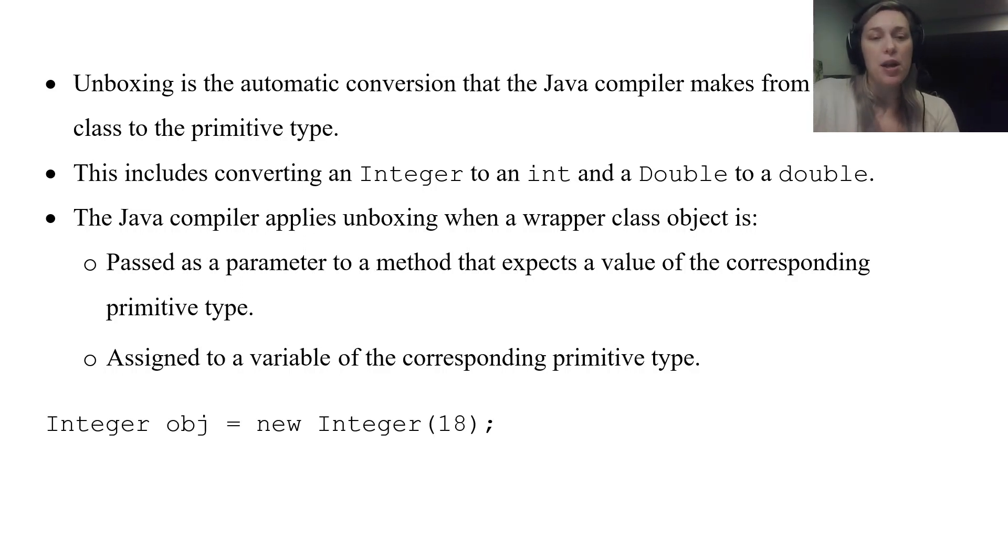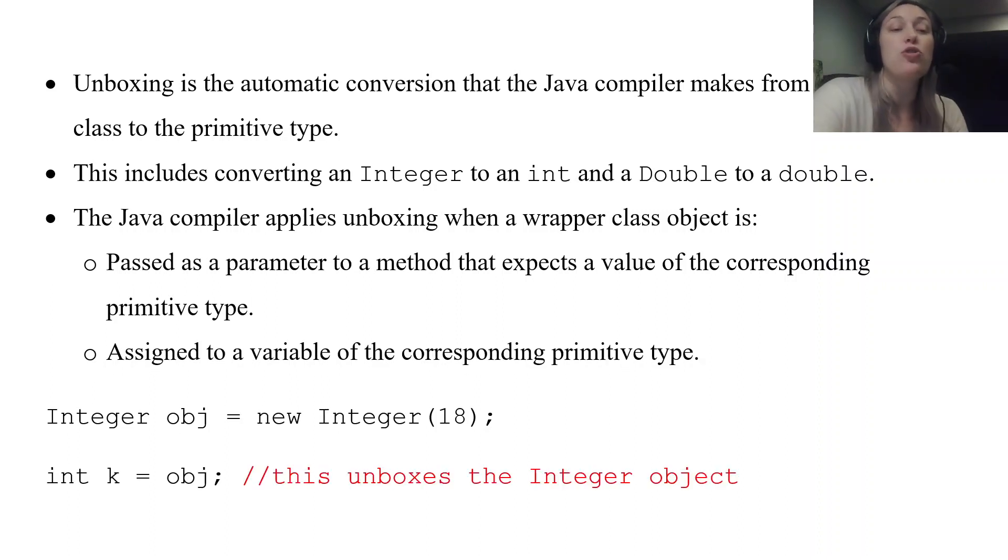So here's some examples. You're creating a new Integer object. But then when you try to assign an object to a primitive it'll unbox the Integer object. So what value gets stored in k? 18 is the value that gets stored in k. It'll automatically unbox it and put that 18 value into k. So it'll take that object and put it into that variable k. Now obj that object doesn't go away. It doesn't unbox it and leave it unboxed. It just unboxes the 18 and puts it in the value of k. Obj still exists. It's still an object. It just unboxes the 18 to put it into k.